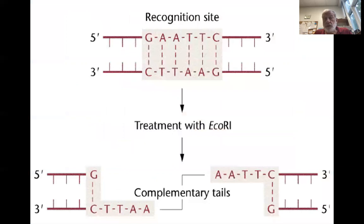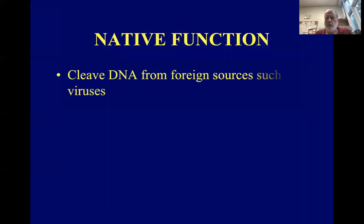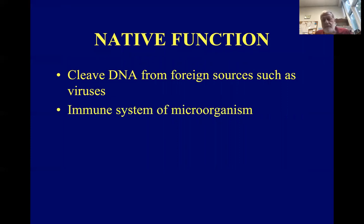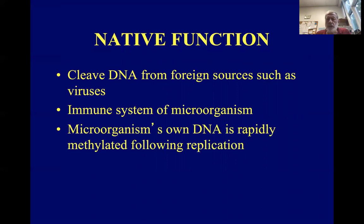This shows a close-up of the EcoR1 restriction site. It cuts between the G and the A, leaving complementary tails. The native function of restriction enzymes is to cleave foreign DNA, like that from viruses injected into the bacteria — kind of an immune system for the microorganism. The bacteria's own DNA is rapidly methylated following replication so the enzymes don't attack and cut it up.